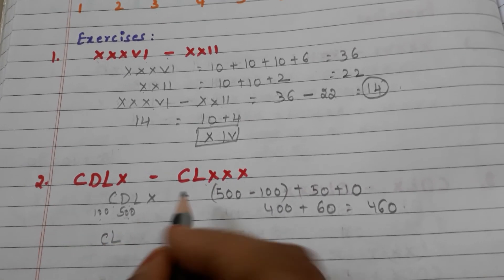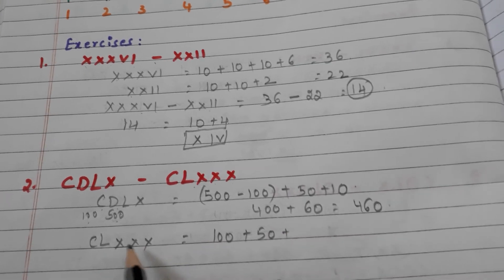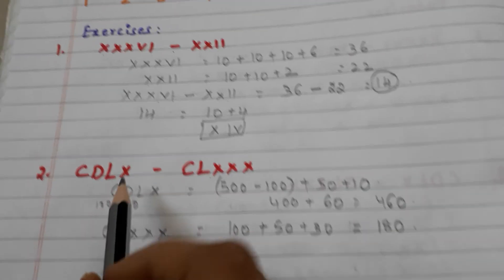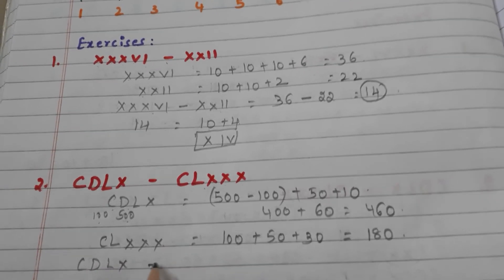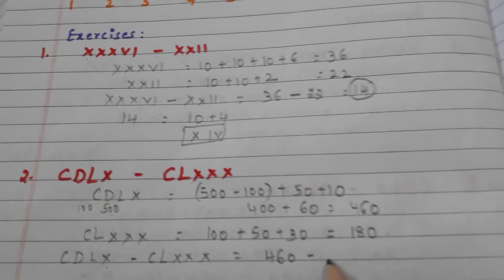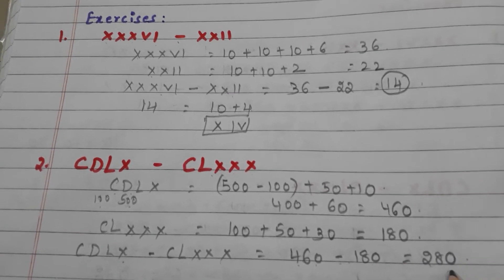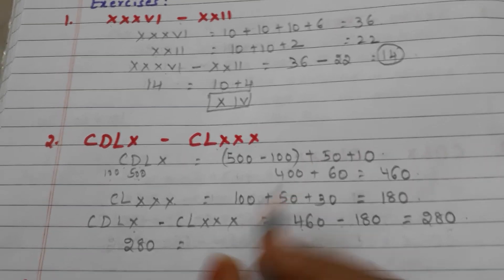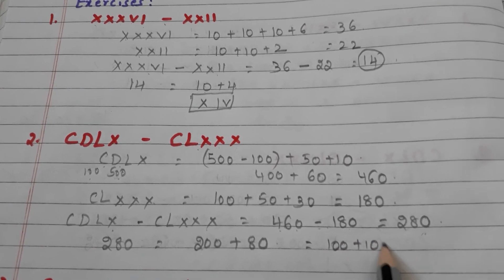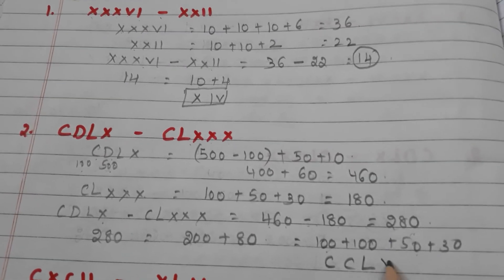Next, take CLXXX. C means 100, plus L means 50, plus XXX means 30, so 100 plus 50 plus 30 equals 180. Now CDLX minus CLXXX is 460 minus 180, which equals 280. We convert 280 back to Roman numerals: 200 plus 80, that is CC plus L plus XXX, so the answer is CCLXXX.